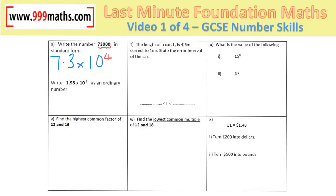When writing numbers back into ordinary form, a negative power tells me it's going to be a zero-point number. Write the digits at the end of the line and move the decimal 3 places: 1, 2, 3. Fill in the gaps to get 0.00193.